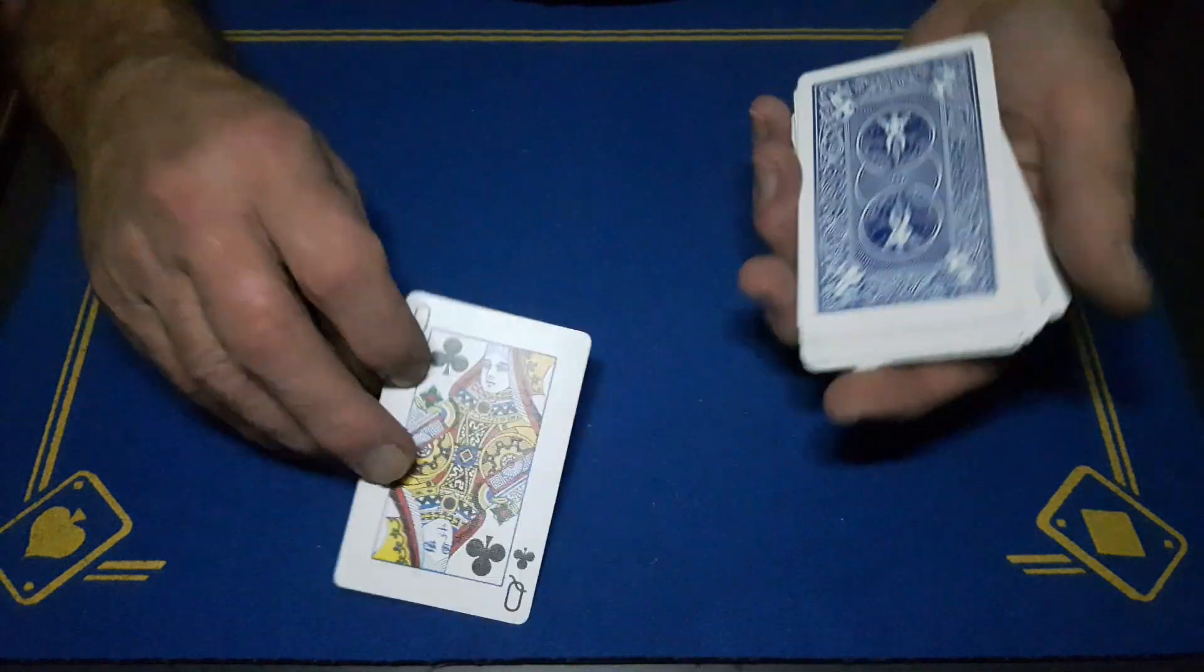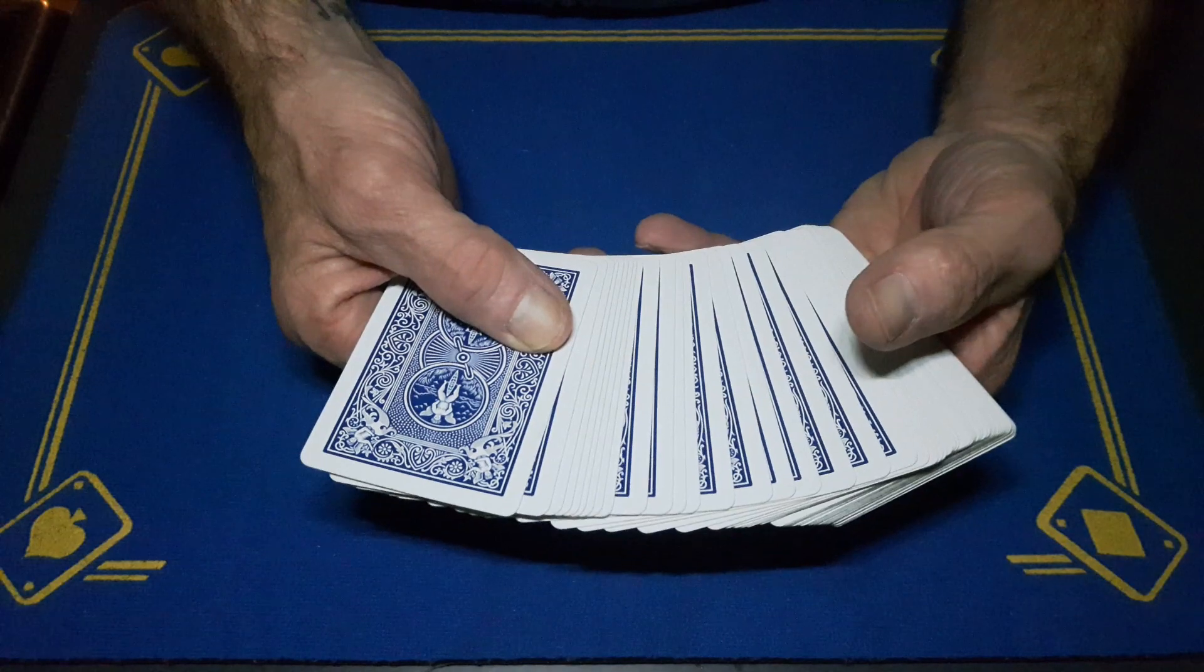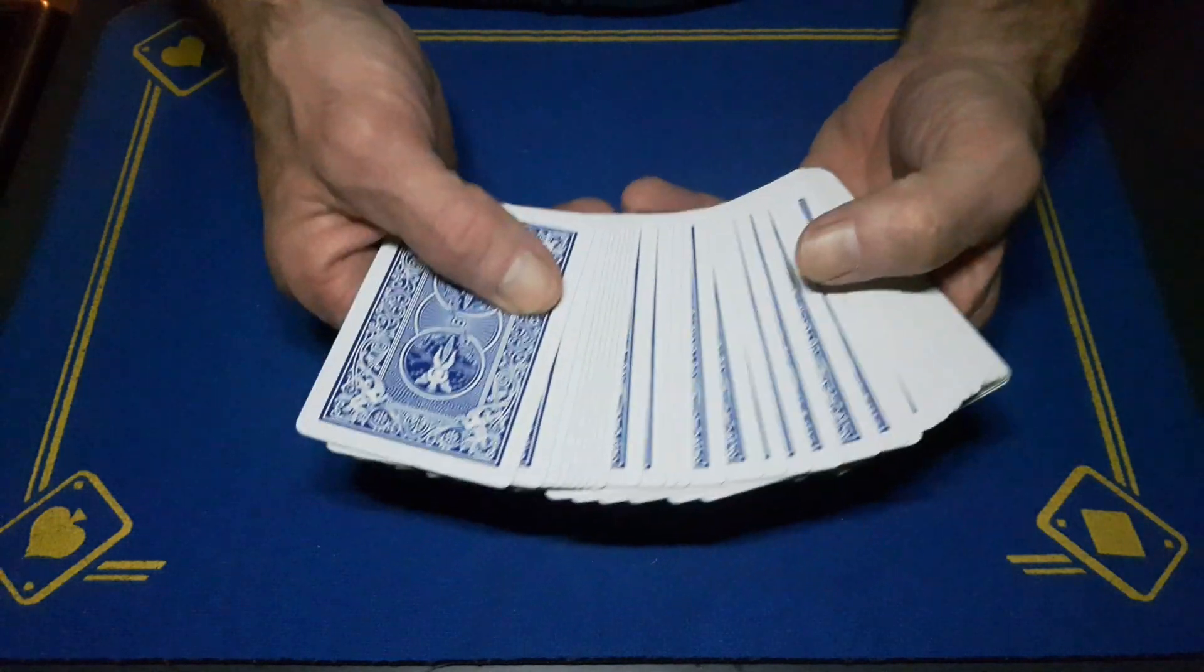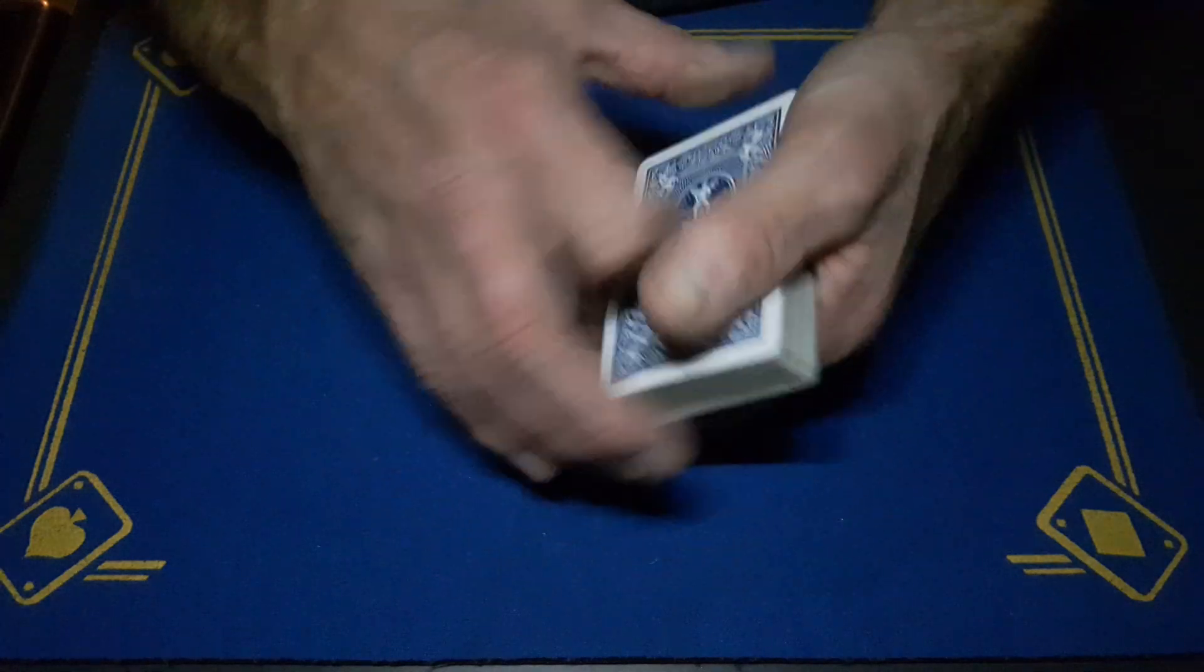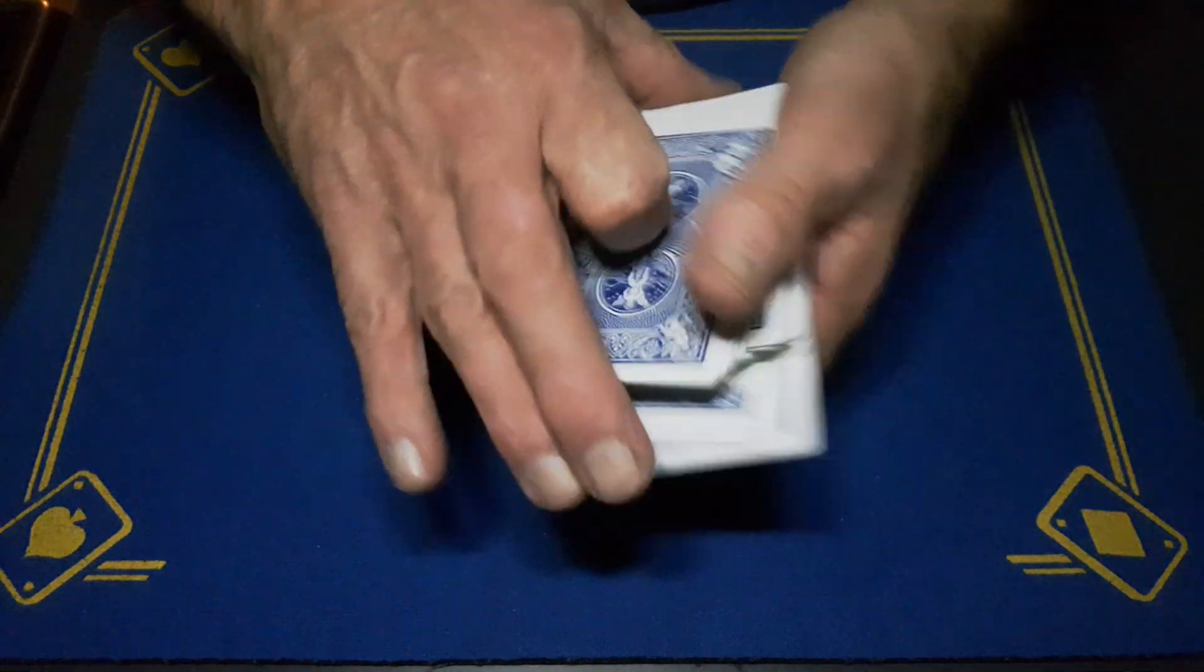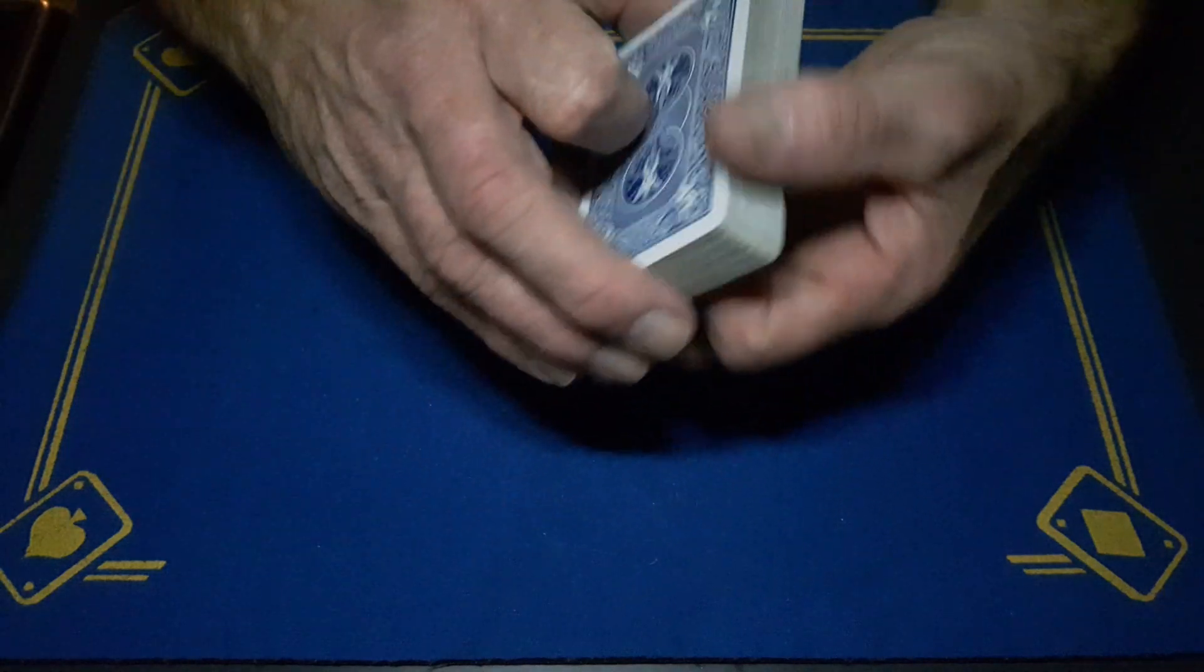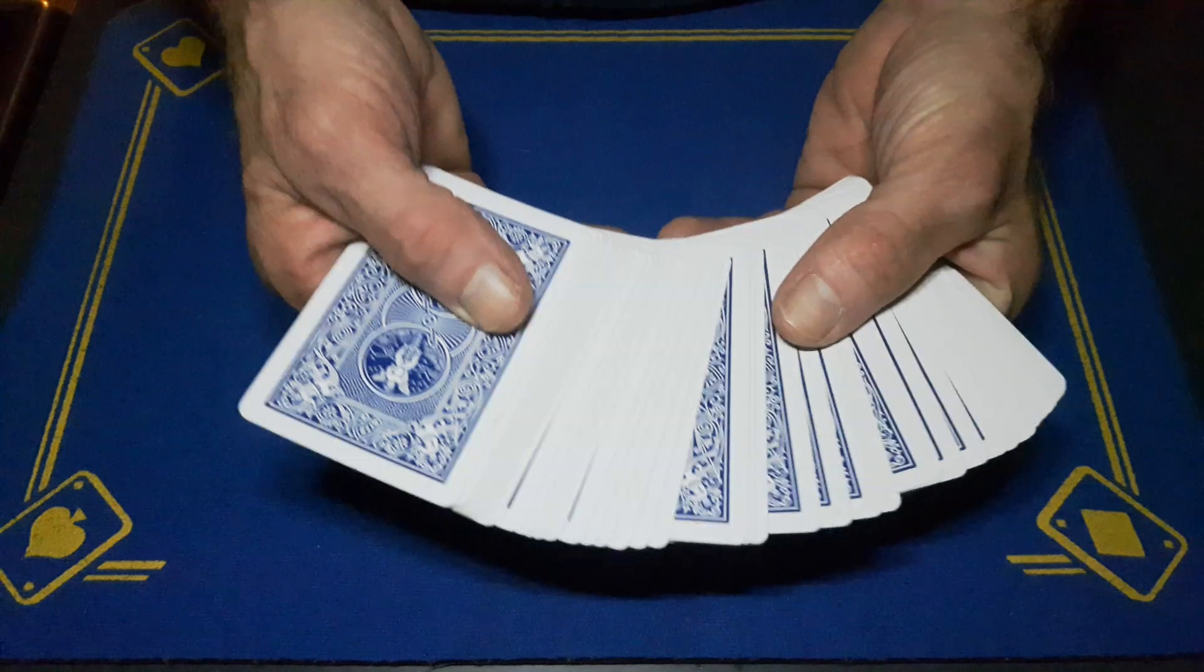But let's just say for instance they take this card. Now when they take a card out, you've got to gauge that this is the top of the deck and this is the bottom of the deck. So you want them to take a card somewhere near the top and somewhere near the bottom, just so that you know it's either a red card or a black card. If you go to somewhere in the center, you could be a little bit stuck.